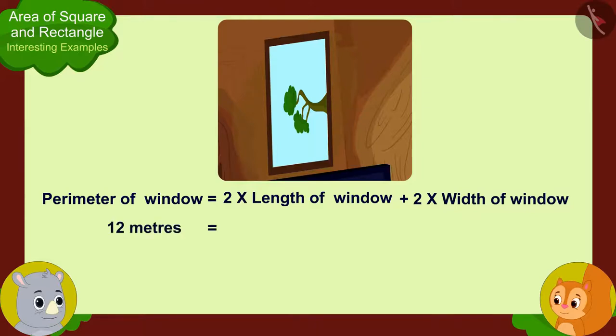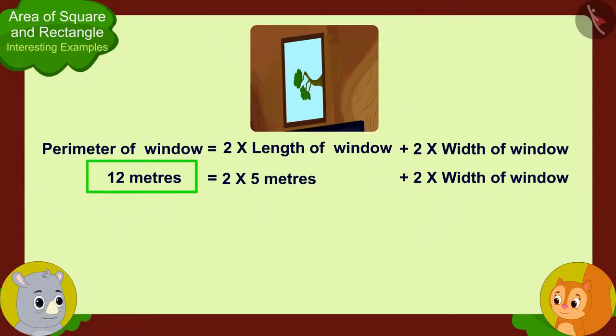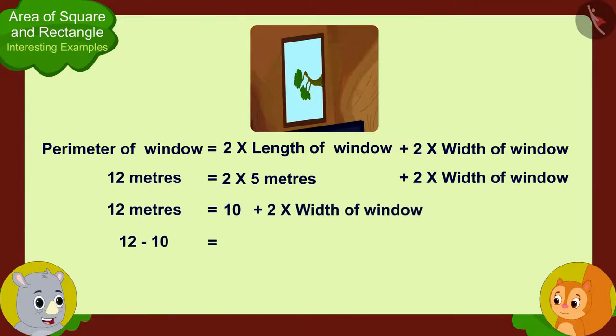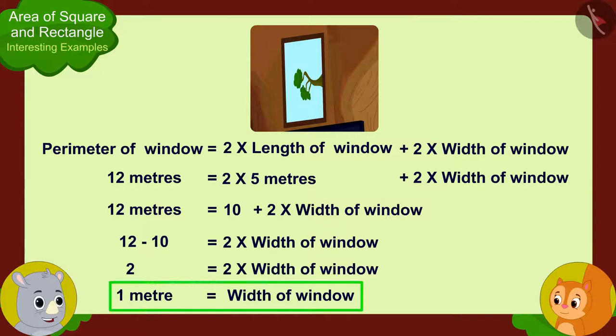Twelve meters. And what is the length of your window? Five meters. Gaggoo quickly wrote the perimeter and length of Chanda's window in this way. Now look Chanda, we can easily find the width of your window in this way. Look, the width of your window is one meter.